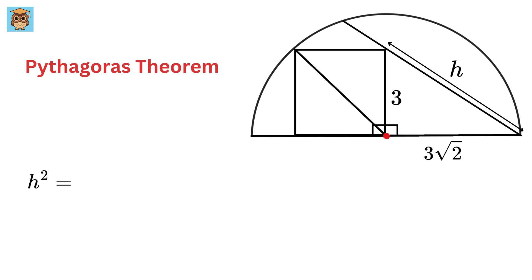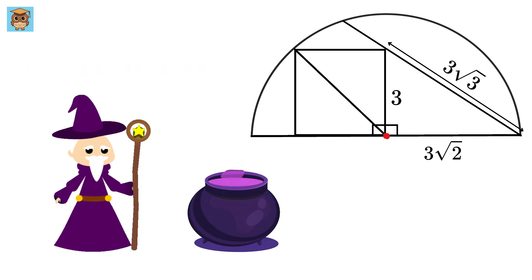So h square equals three square plus three root two whole square or nine plus 18 or 27. So h equals root 27 or 3 root 3. Great. Now here comes the magic.